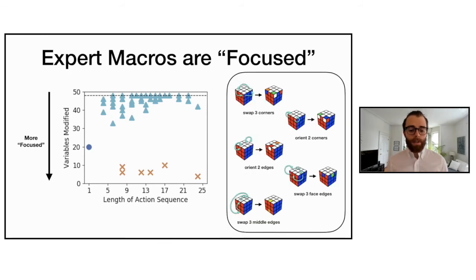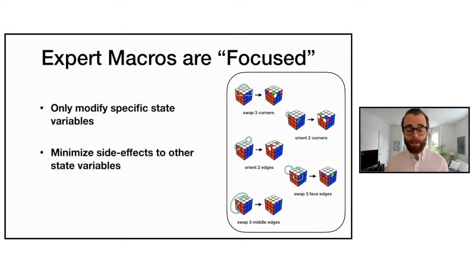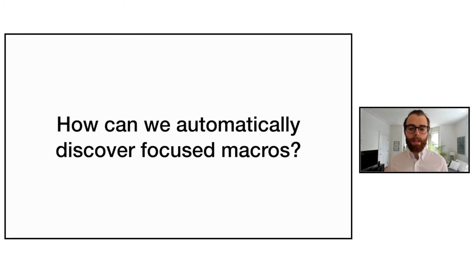This matches intuition about the expert macro actions — they essentially only modify specific state variables and minimize side effects to other state variables. Given this insight, the real question is: how can we automatically discover focused macro actions, rather than hand-specifying expert macros for every planning problem?